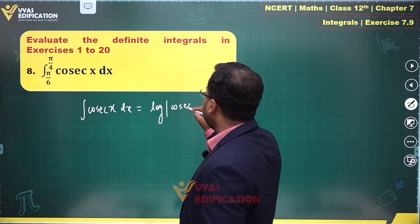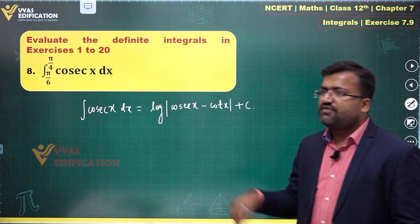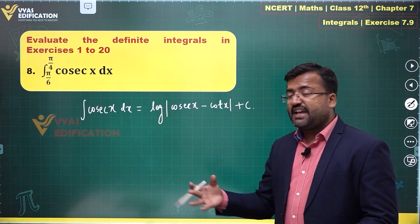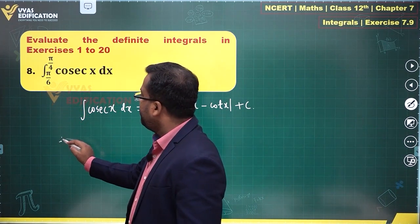Mod cosec x minus cot x plus constant of integration. This is the formula. Integral of sec x is log mod sec x plus tan x, and this is cosec x minus cot x.